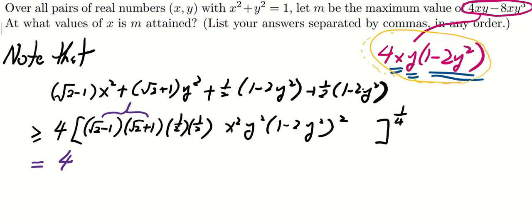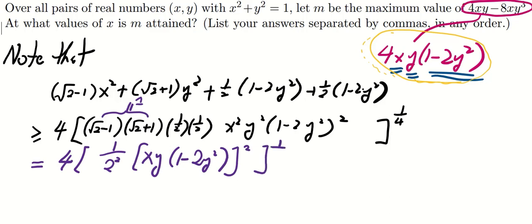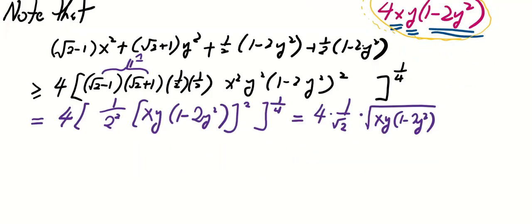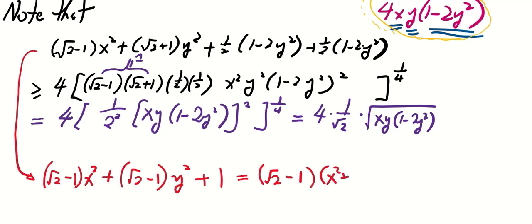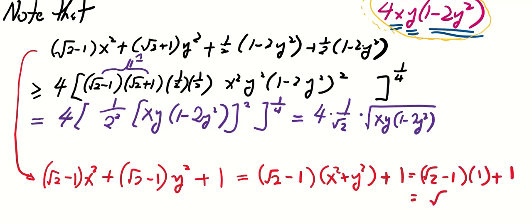Note that (sqrt(2) minus 1) times (sqrt(2) plus 1) equals 1. So the expression equals 4 times (1/2) squared times [xy(1 minus 2y squared)] squared, all to the power of 1/4, which equals (4 / sqrt(2)) times the square root of xy(1 minus 2y squared). The first-line expression is equivalent to (sqrt(2) minus 1)x squared plus (sqrt(2) plus 1)y squared plus 1, which factors as (sqrt(2) minus 1)(x squared plus y squared) plus 1, and since x squared plus y squared equals 1, this equals sqrt(2).